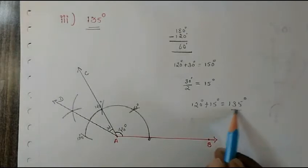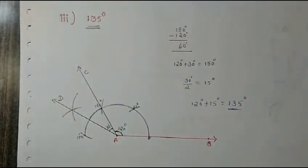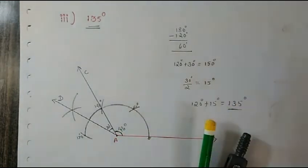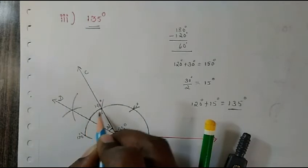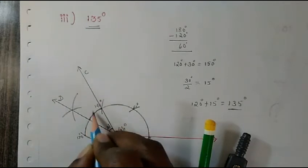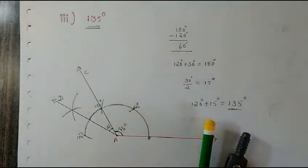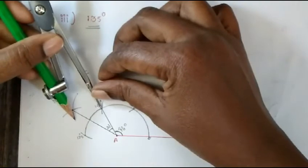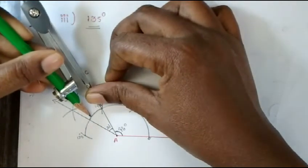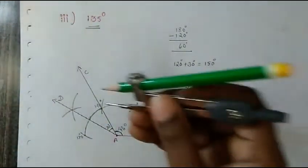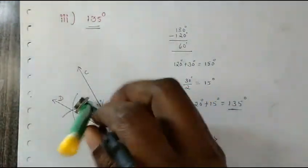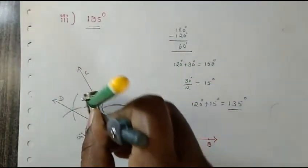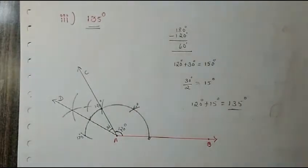So we will bisect this 30 degree angle equally in half to get 15 degrees. Take your compass, measure more than half of this angle between these two points. Keep the compass at this point and draw an arc, then keep it at the other point and draw another arc. Now join this intersection point.